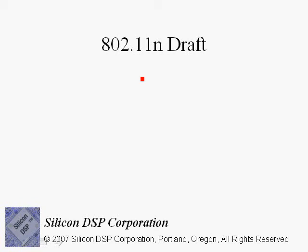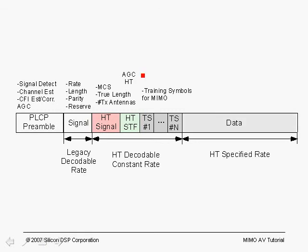Here is the structure of the packet for an 802.11n system. The first 16 microseconds we have the PLCP preamble, which is compatible with the legacy preamble for 802.11a. That's followed by the legacy signal field at 4 microseconds, and this whole portion is decodable by a legacy system.